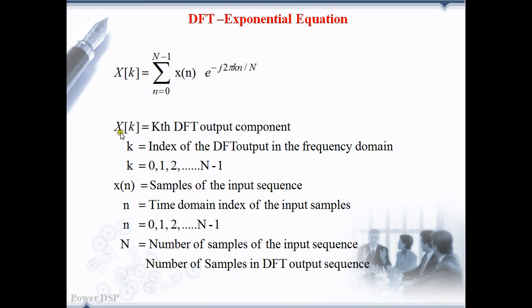x of k is the kth DFT output component and it holds the amplitude value for the index k. k runs from 0 to N minus 1. N is the number of samples in the input sequence. x of n is the samples of the input sequence and n is the time domain index which also runs from 0 to N minus 1.